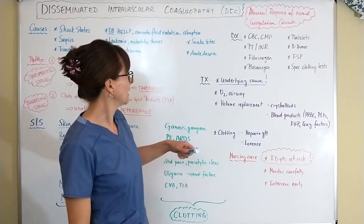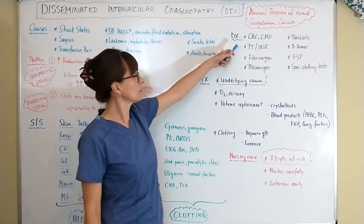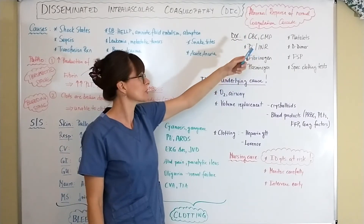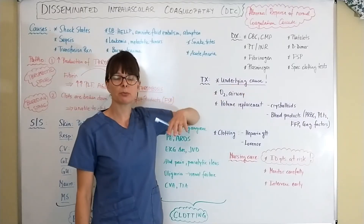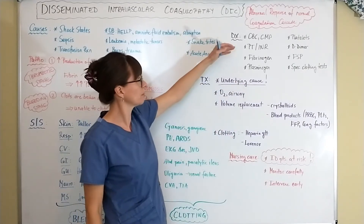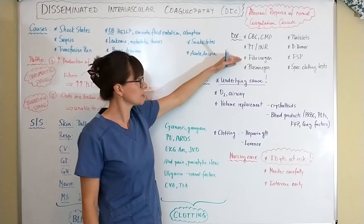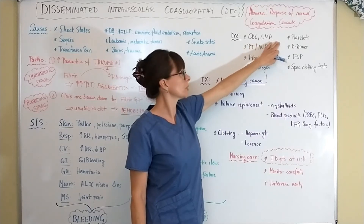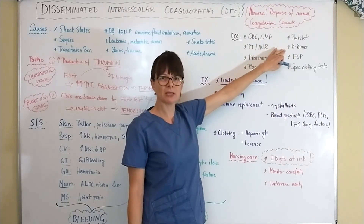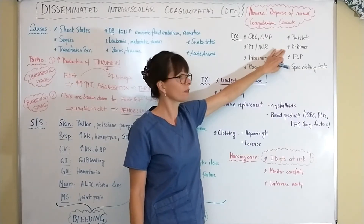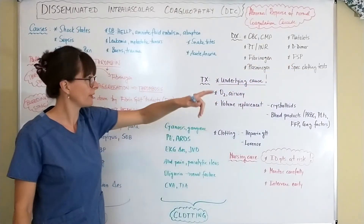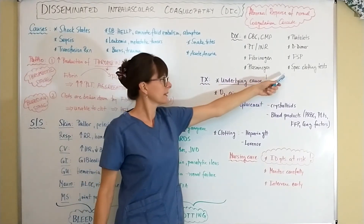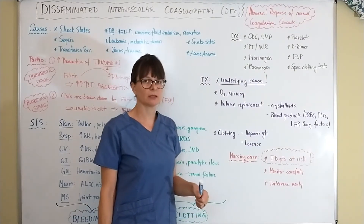Diagnostic tests include a CBC to assess blood counts, and a CMP to evaluate kidney and liver function and electrolytes. Coagulation-related labs include bleeding times, PT/INR, fibrinogen level, plasminogen level, platelet count, and D-dimer — though D-dimer is a very non-specific marker of clotting. Fibrin split products (FSP) can also be measured directly in the blood, and the provider may order other specialized clotting tests.